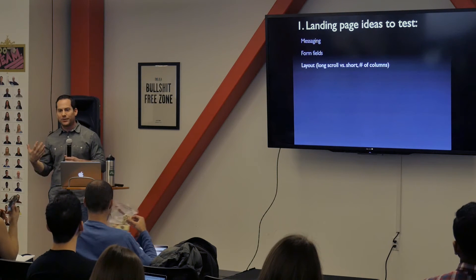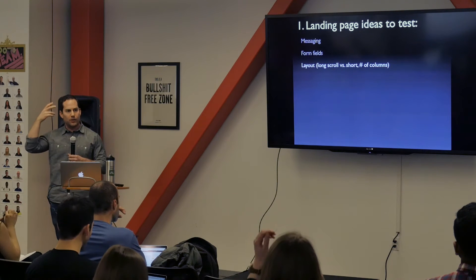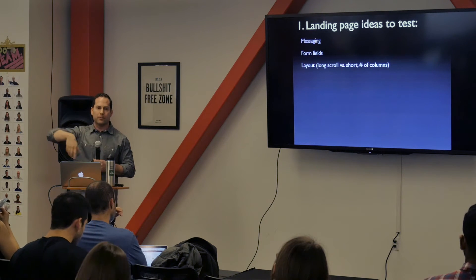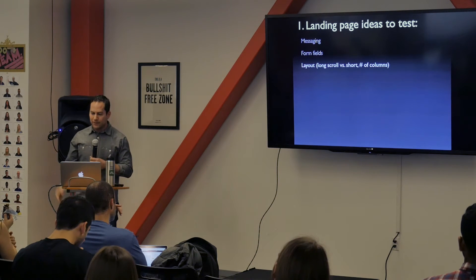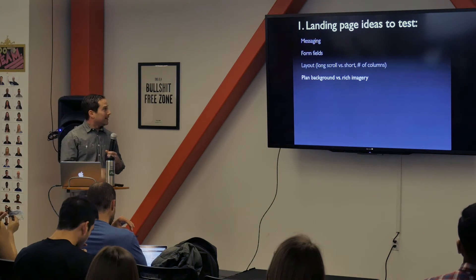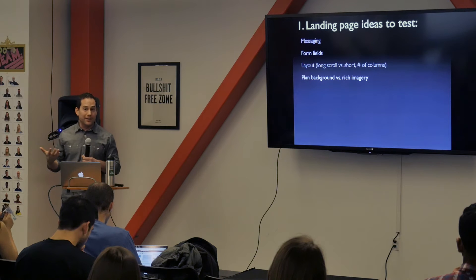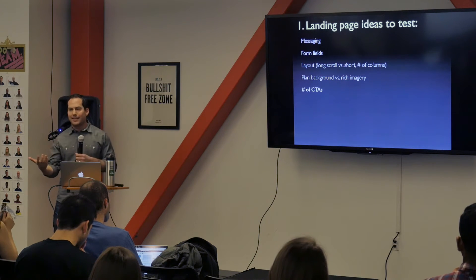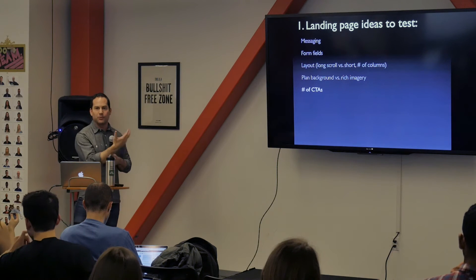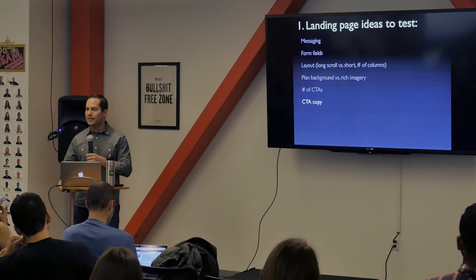Layout is always an intriguing test: is it better to have a short, sweet, above-the-fold landing page that doesn't make users overthink anything, or a super long scroll with all the information right in front of them? Is there an optimal number of columns? Sometimes less is more, sometimes more is more. Also consider your CTAs — with landing pages the answer should be one, but test which ones maximize your conversion rate. Same with CTA copy: what exactly are you asking them to click on? Very easy to run.